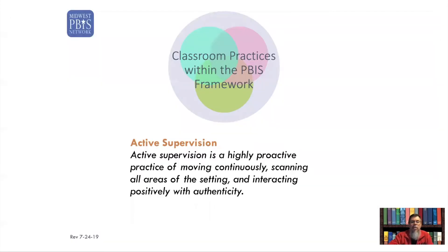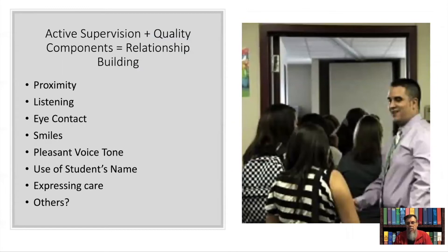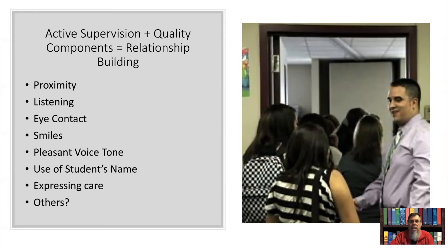Active supervision is a proactive practice of moving around continuously and scanning all areas of the setting. It means you're actively moving, looking, watching, and listening. Don't always take the same path — students will figure out where you won't be looking. Change your path regularly so you can see and hear more. Use proximity prompts by moving closer to students when a situation may be developing. Eye contact, smiles, a pleasant voice tone, and showing genuine interest in students all contribute to active supervision.